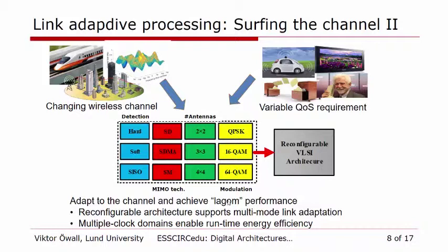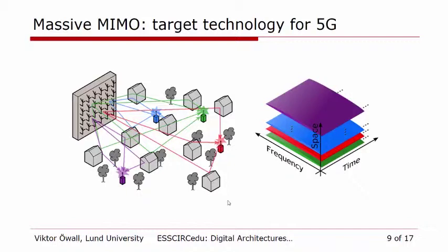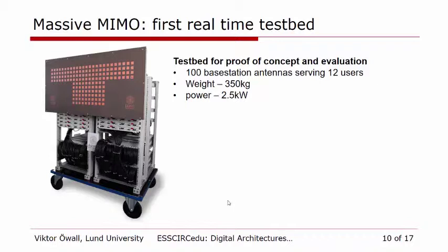Today we are into the next step: Massive MIMO, a target technology for fifth generation wireless. In Massive MIMO, we have a huge number of antennas at the base station — hundreds, at least — but simple terminals with single antenna or maybe two antennas, and we focus the energy exactly to the user we want. That means we can get very high spectral efficiency and actually reduce the power consumption a lot. This is our test bed for Massive MIMO, designed in Lund together with National Instruments — a test bed for proof of concept and algorithm evaluation. It has 100 base station antennas serving 12 users in the current setup. It weighs 350 kilos and takes 2.5 kilowatts.